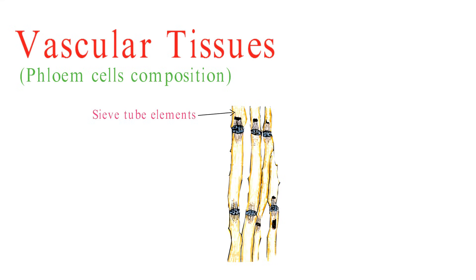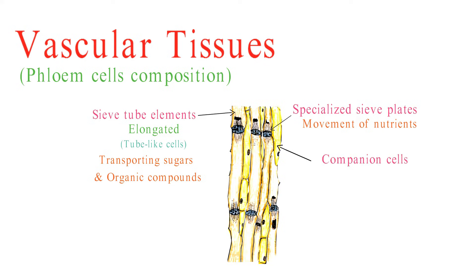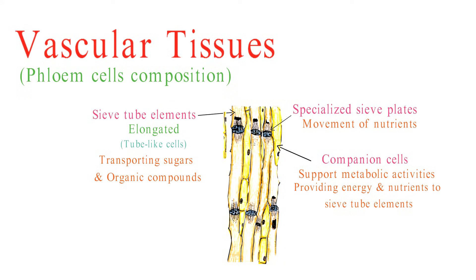Sieve tube elements are the main functional cells of the phloem. They are elongated, tube-like cells that form the conduits for transporting sugars and other organic compounds throughout the plant. These cells have specialized sieve plates with perforations that allow for the movement of nutrients between cells. Companion cells are closely associated with sieve tube elements and play a crucial role in supporting their metabolic activities. They maintain their nuclei and are responsible for providing energy and nutrients to the sieve tube elements, ensuring the efficient transport of sugars.